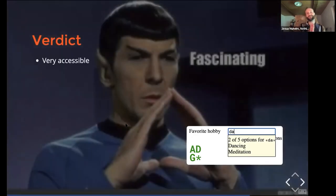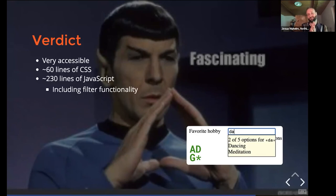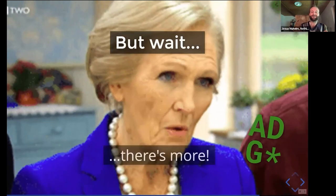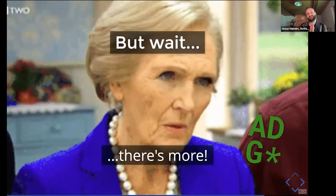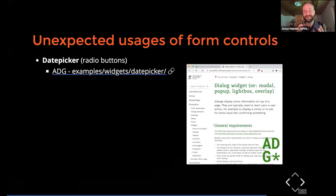A small verdict: the element is very accessible and only needs 60 lines of CSS and roughly 200 lines of JavaScript, including the filter functionality. But there is more — there are more such unexpected usages of form controls in our Accessibility Developer Guide. You can learn how to create a date picker, a tablist, a carousel, an accordion, or a menu toggler.